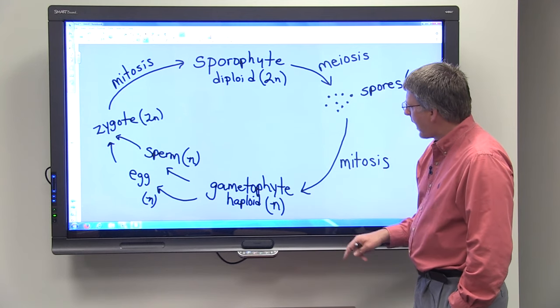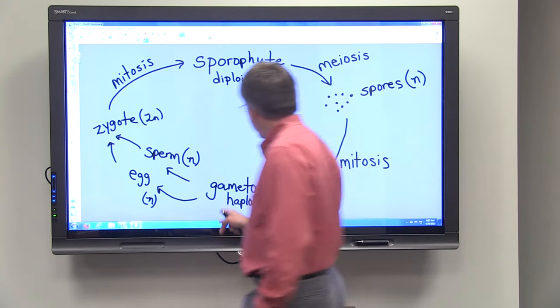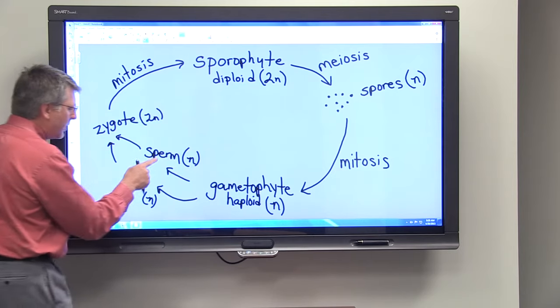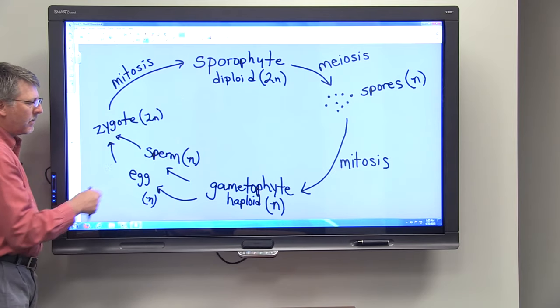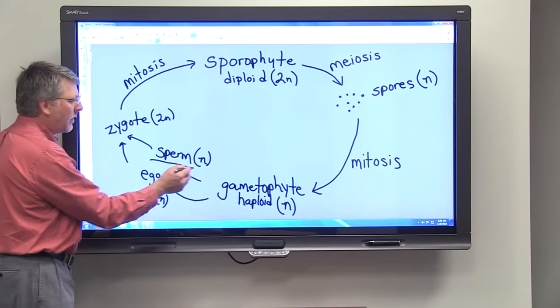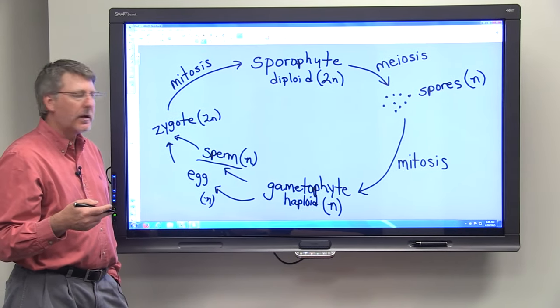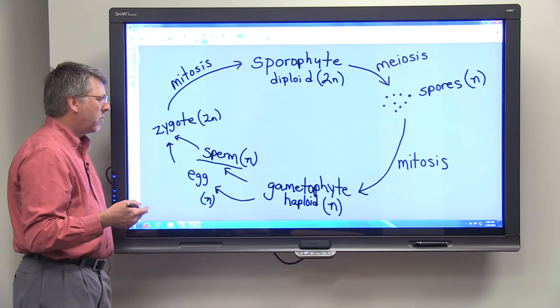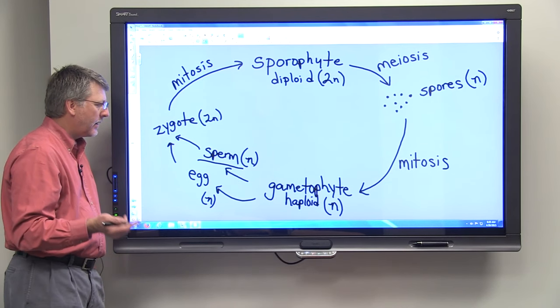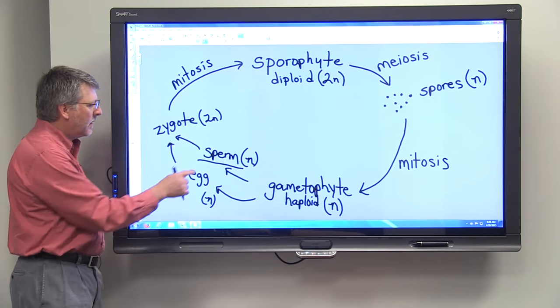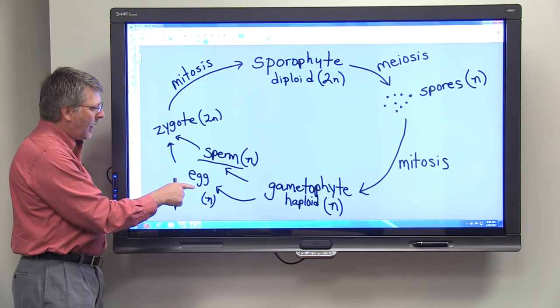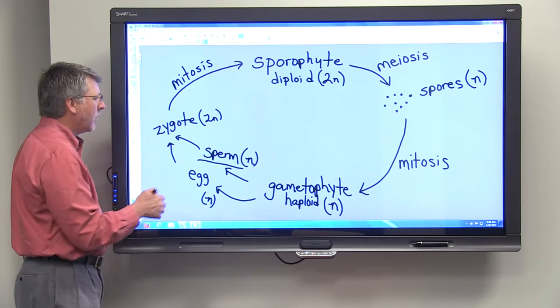Now, this haploid gametophyte, as the name suggests, produces gametes, sperm and egg. If you think about pollen, pollen represents the male gametophyte for plants such as trees, pine trees, oak trees, etc. So, the sperm and the egg are both haploid.